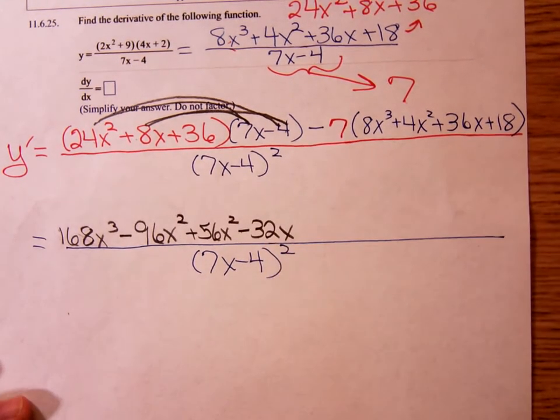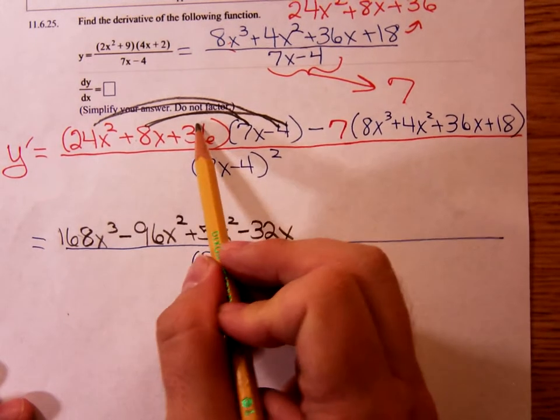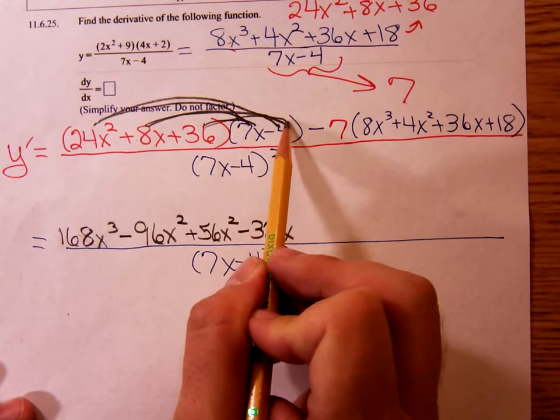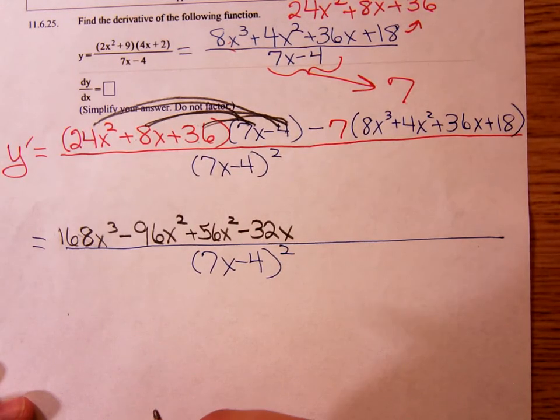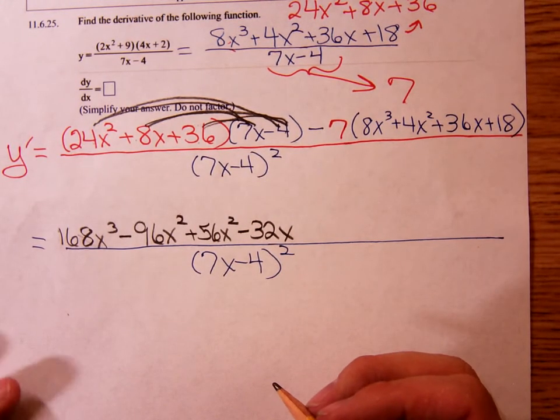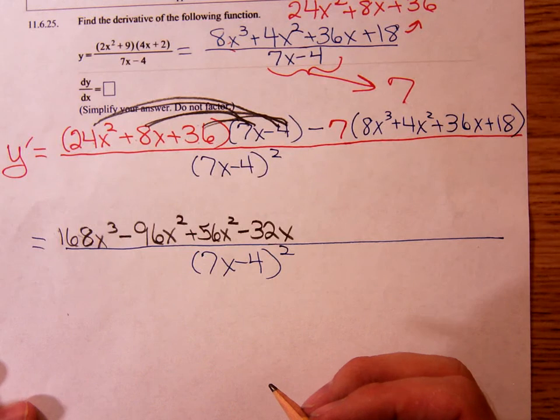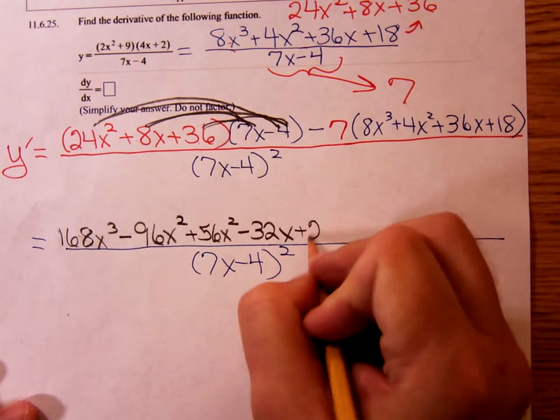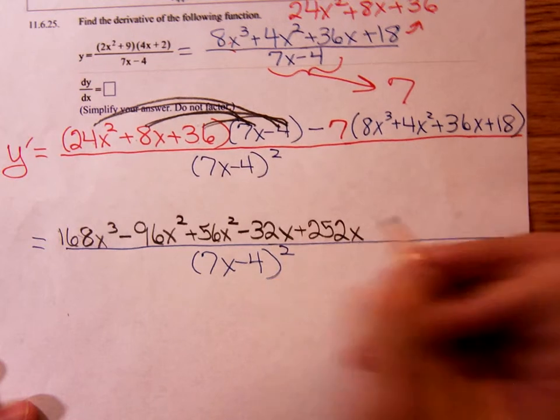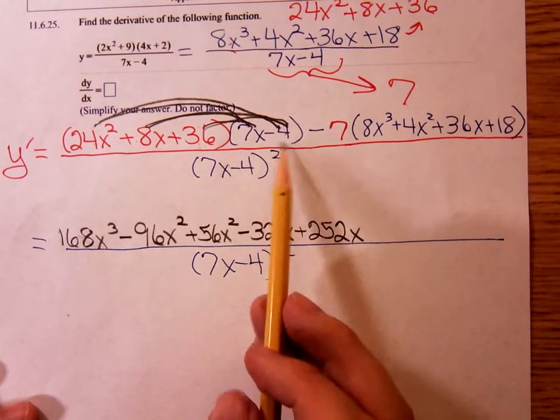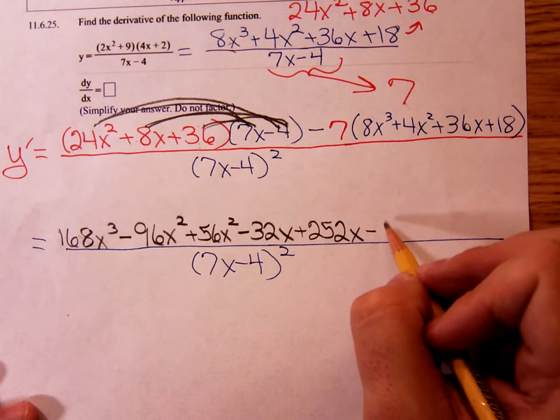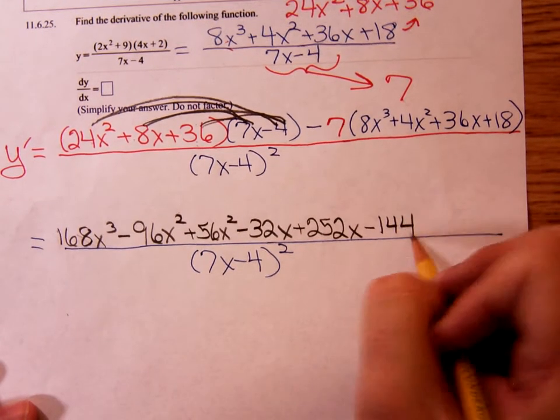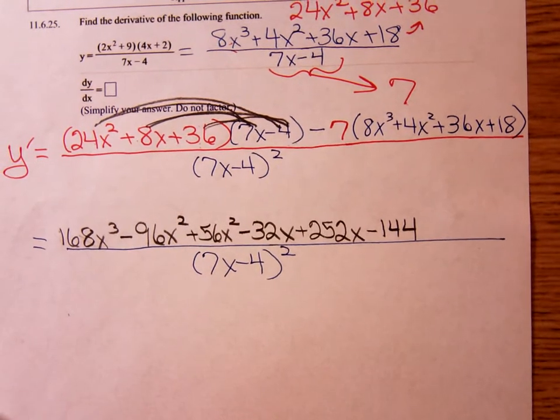Okay, so we're taking the 36 times the 7x minus 4. So, 36 times 7x is 252x and a minus 144. Is it 144? Yes. And now what do I have to do?